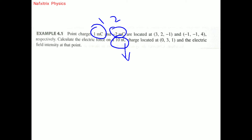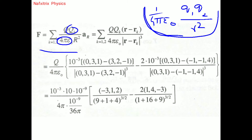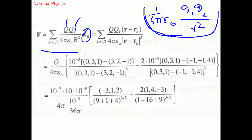Here, q is the charge of the particular point on which we need to find the force, and qk represents the remaining charges that exert force on that point. The term â (unit vector) gives the direction of the position vector.